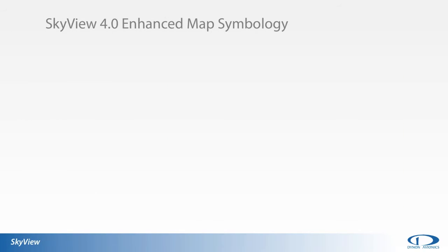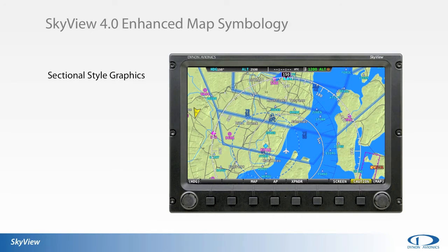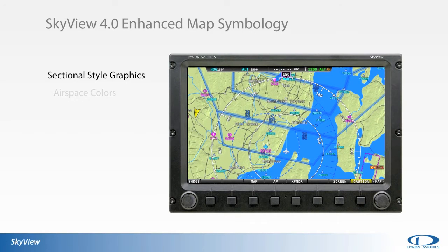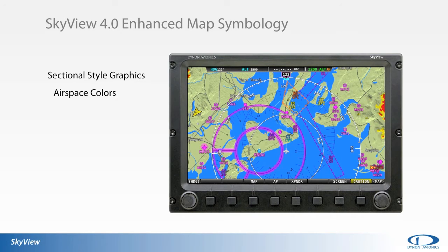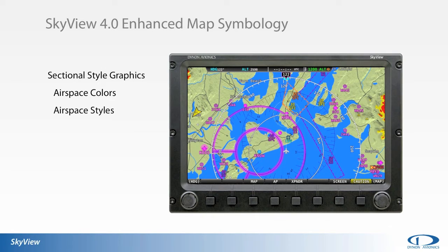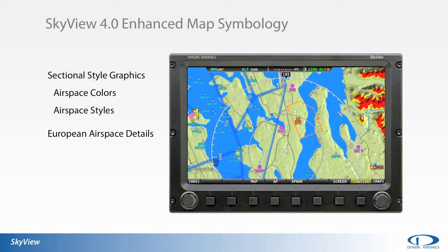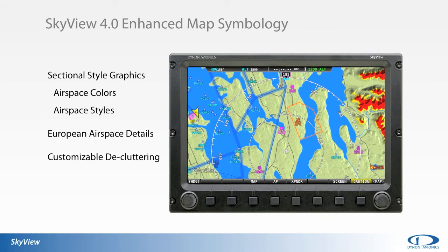The depiction of airspace on the SkyView moving map has been improved to better match the colors used on traditional sectional-type charts. The style of airspace depictions has also been changed to further mimic a sectional chart depiction. Several more categories of airspace are now displayed with SkyView 4.0 to better define their boundaries for European customers. Filtering the display of any unique airspace type based on the current zoom level is customizable by the pilot to declutter the map display at any given map range.